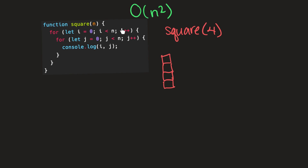We go back up to the outer for loop. Now i equals one and j resets to zero — draw a square. i equals one, j equals one — draw a square. i equals one, j equals two — draw a square. i equals one, j equals three — draw a square. Then j equals four, which equals n, so we stop the nested loop and return to the outer for loop.